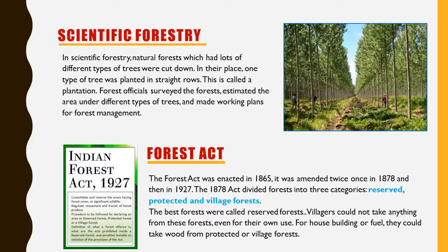The area cut was then to be replanted so that it was ready to be cut again in some years. After the Forest Act was enacted in 1865, it was amended twice — once in 1878 and then in 1927. The 1878 Act divided forests into three categories.